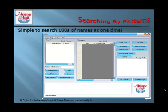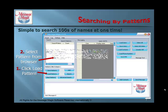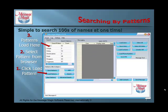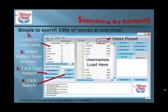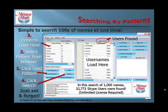Searching by Patterns: it is simple to search hundreds of names at one time. Click Load Patterns and select the pattern from the browser. The patterns will load in the Search Patterns box. Click Search — the usernames will load, and when it is finished, you will see how many usernames you have. In this case, 32,773 results from a search of 1,000 names. Just set it and forget it. In order to do this, you must have an unlimited license.